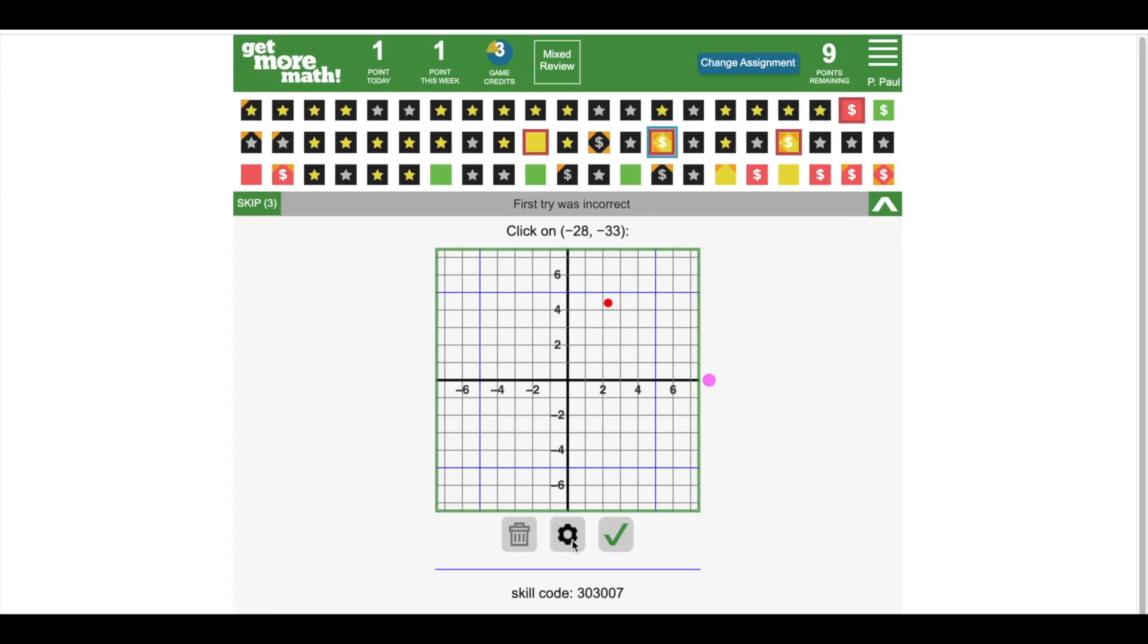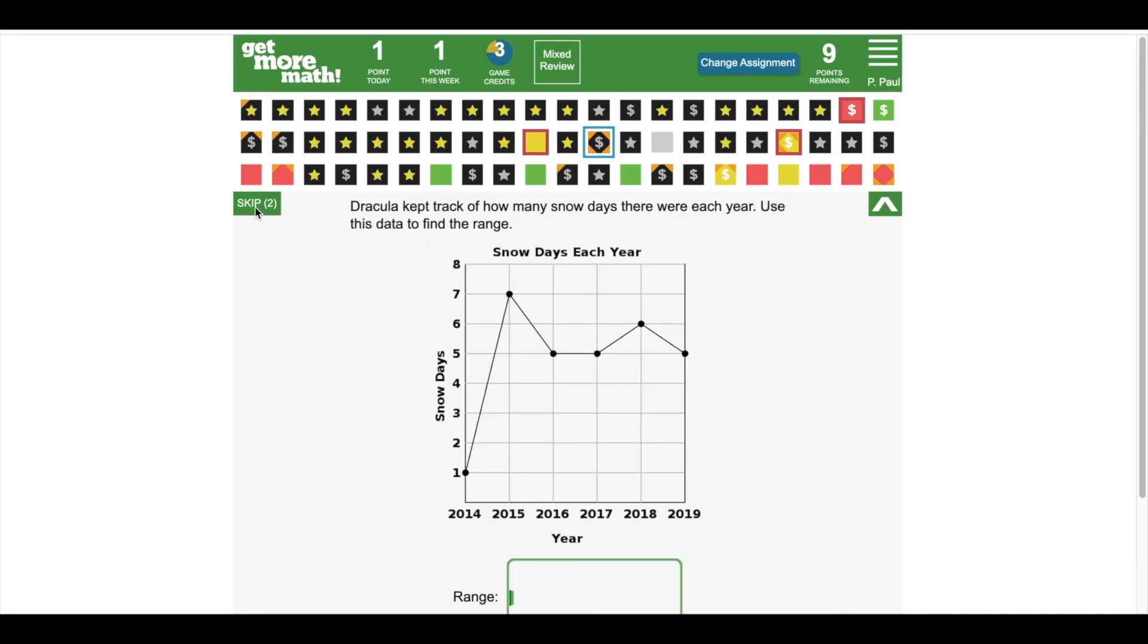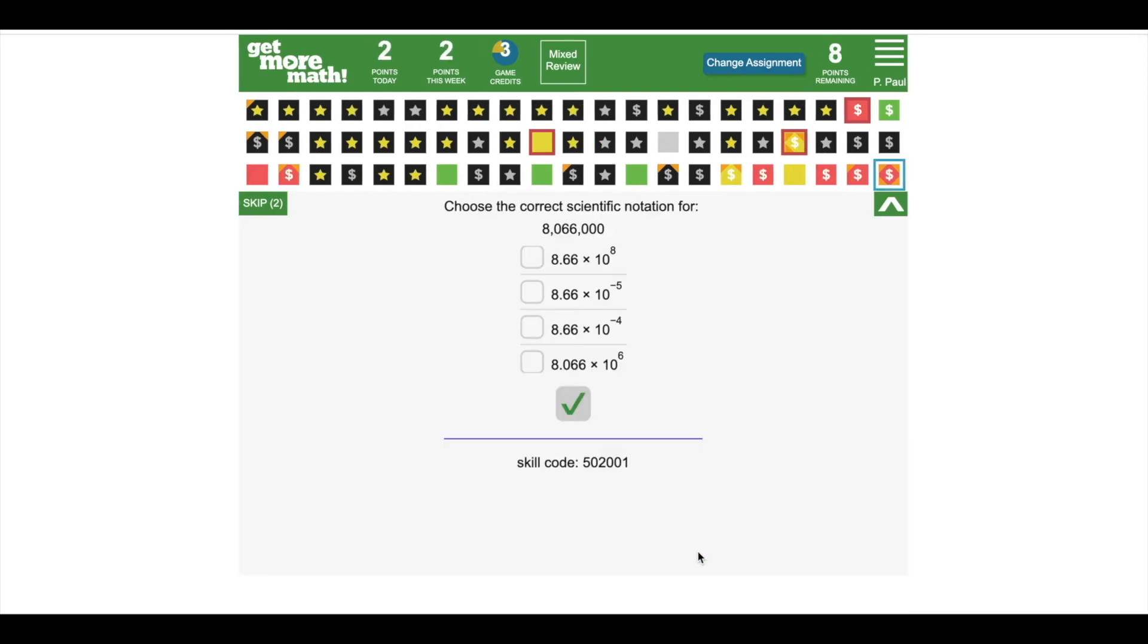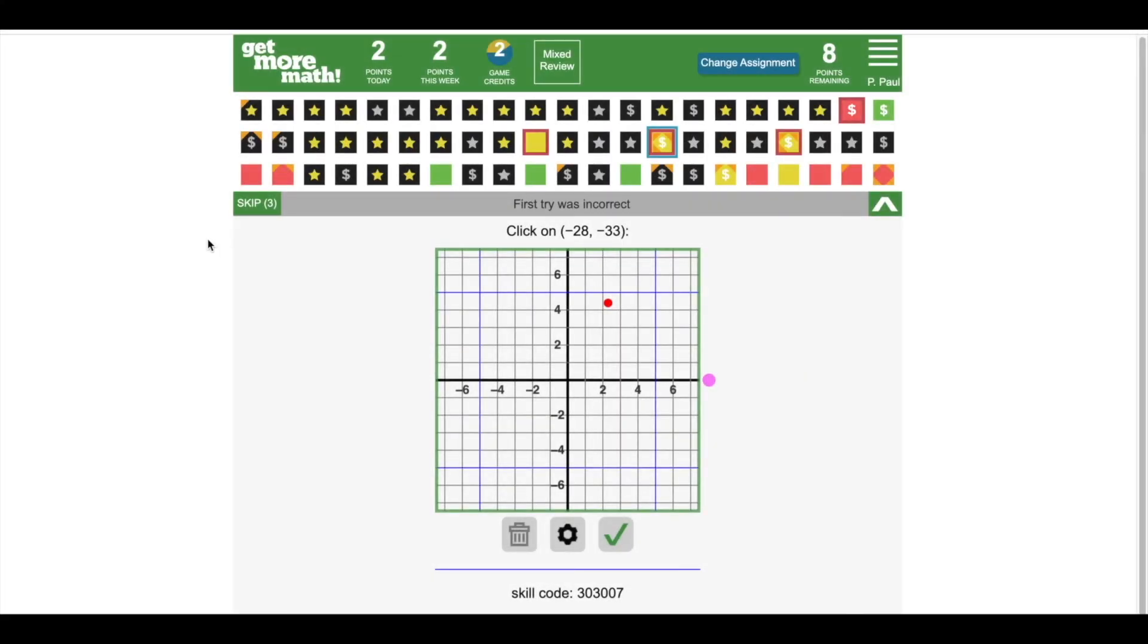One feature that will help when you are stuck is the Skip feature. This is only available in Mixed Review, and when pressed, it will gray out the skill that you are having issues with, giving you another skill to practice and earn points. Skips are not locked, so if you happen to log out and log back in, all skills will be available and all of your skips will be as well.